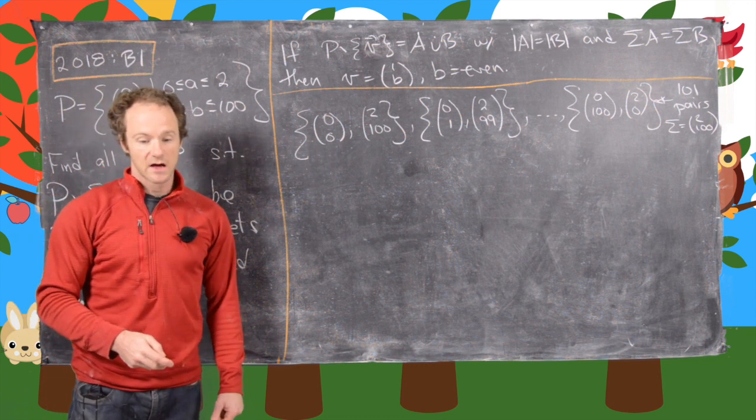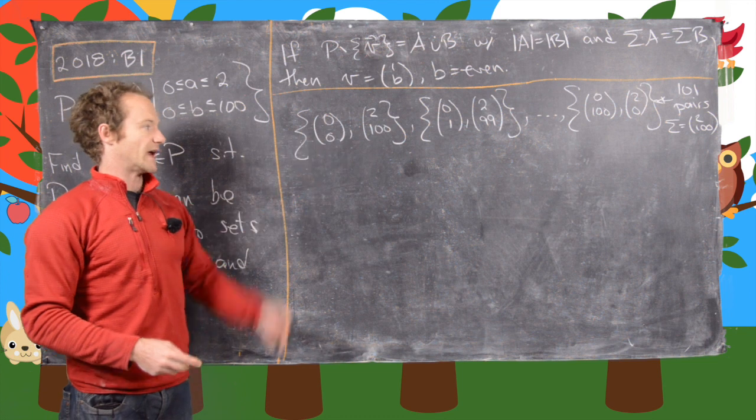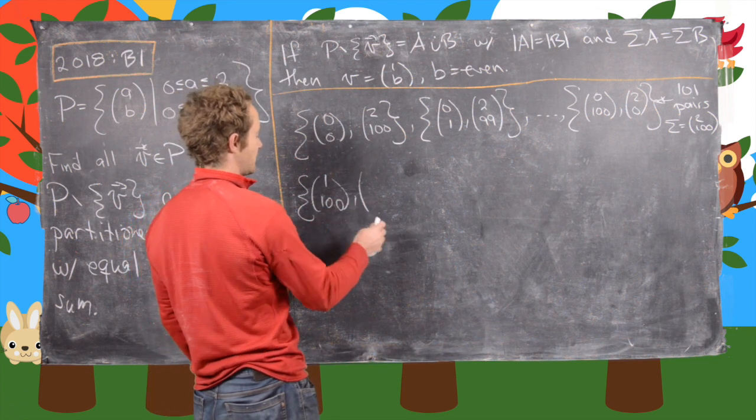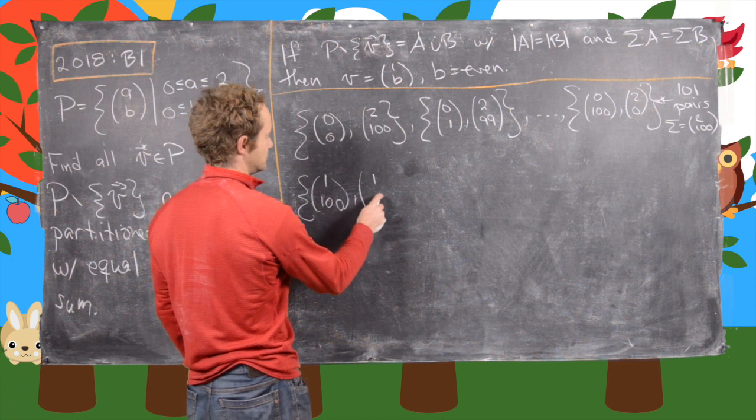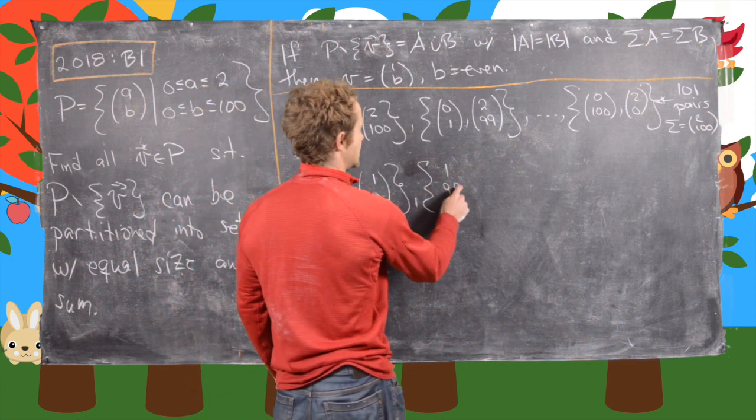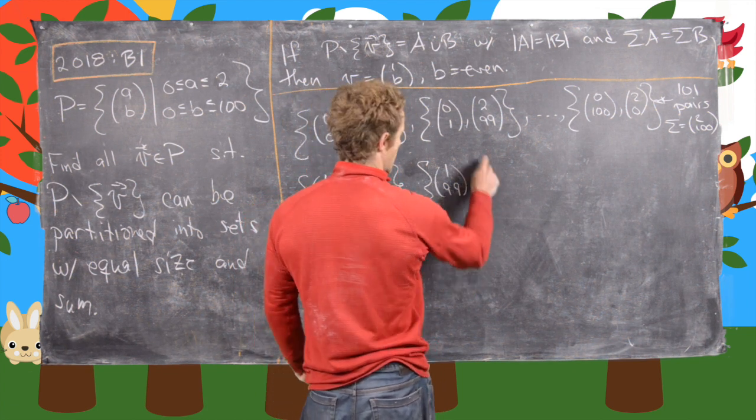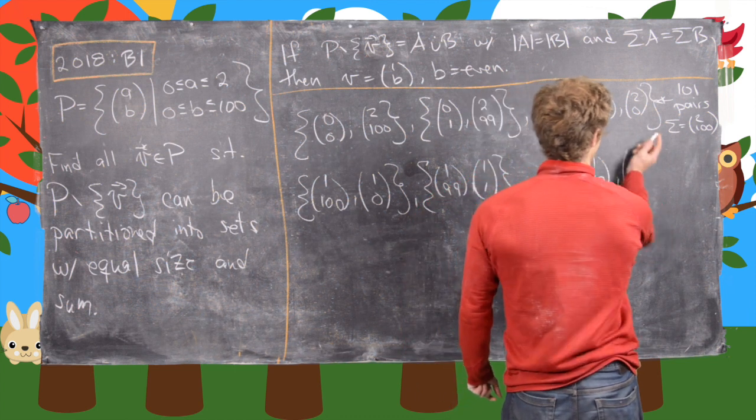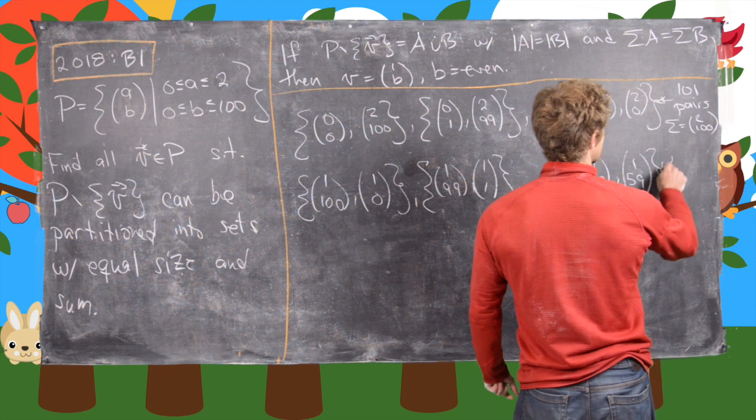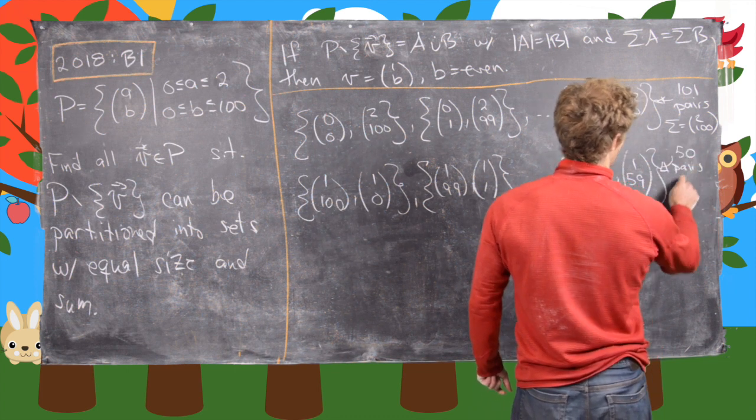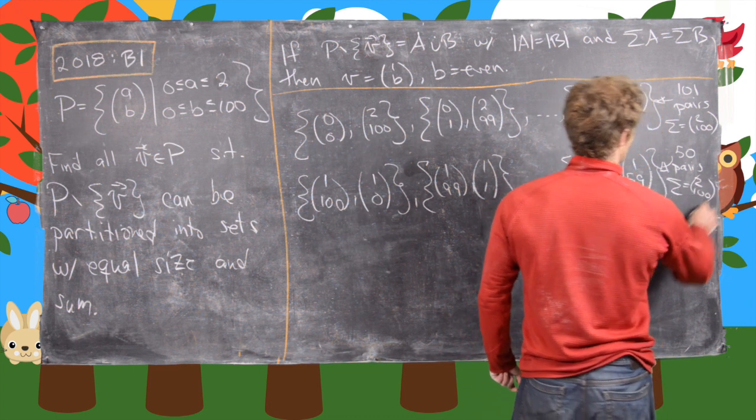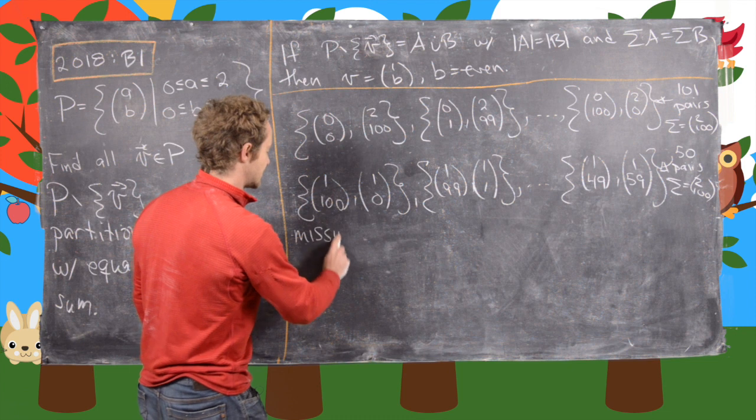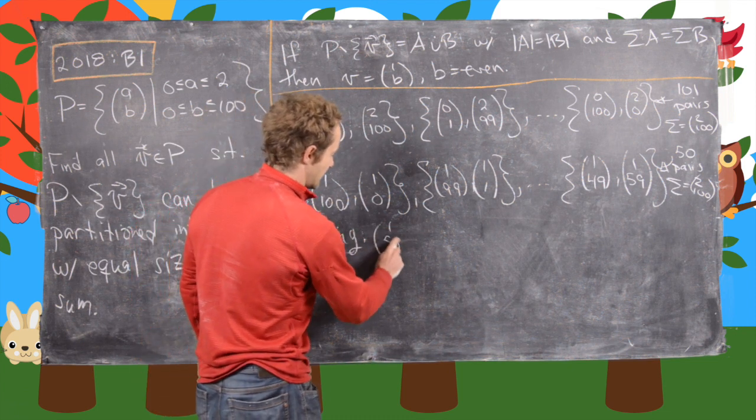Now we're going to do the same thing for the vector (1, blank). We have (1,100) paired with (1,0), then (1,99) paired with (1,1), and so on up to (1,49) paired with (1,51). This is exactly 50 pairs, and their sum is equal to (2,100). Notice that in all this list, we're missing the vector (1,50).